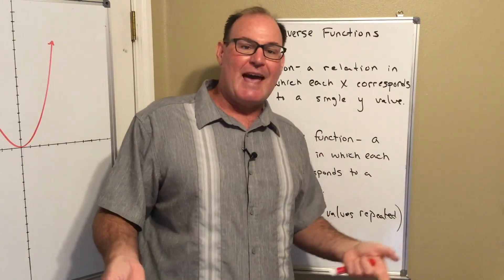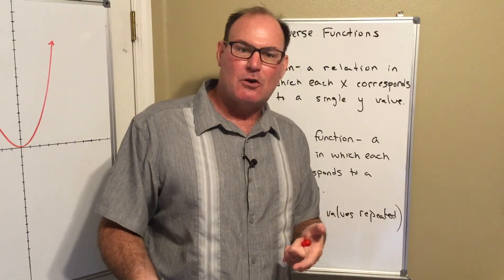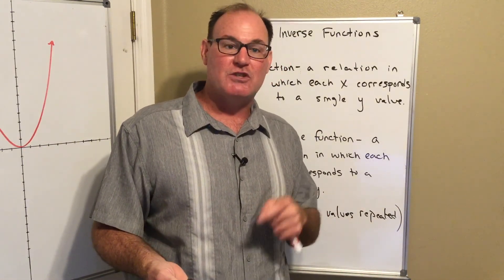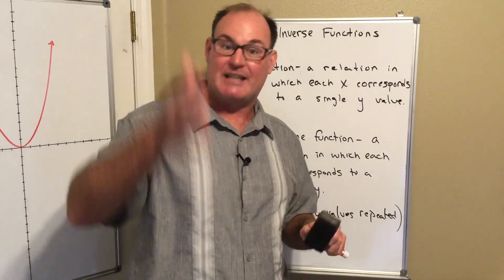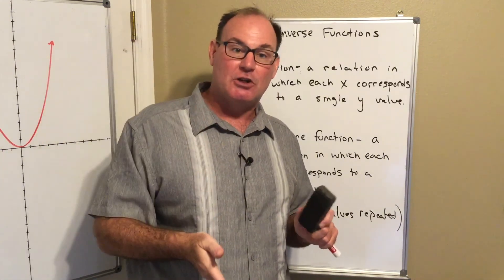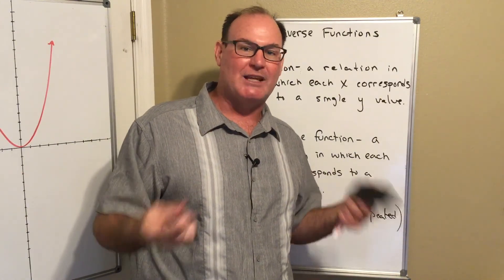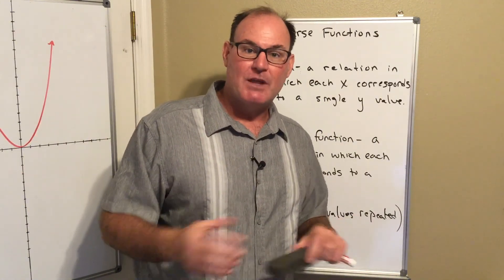And so we looked at the six basic graphs. We determined if things were functions by using what was called the vertical line test. If I could pass a vertical line through a graph and it hit the graph one place only, I had a function.